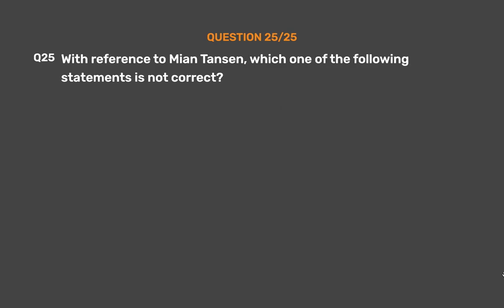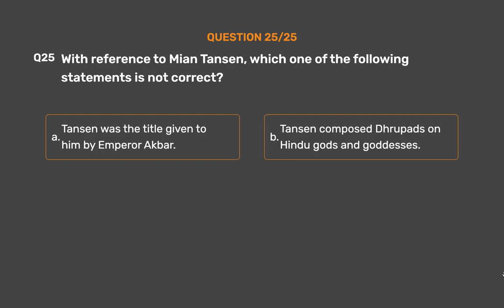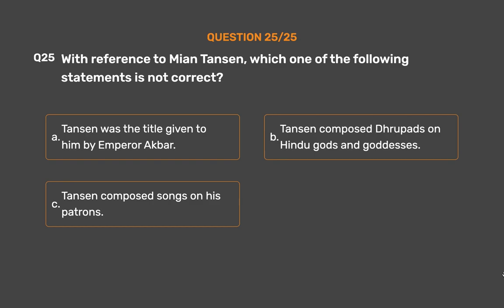Question No. 25: With reference to Mia Tansen, which one of the following statements is not correct? Option A: Tansen was the title given to him by Emperor Akbar. Option B: Tansen composed Dhrupads on Hindu gods and goddesses. Option C: Tansen composed songs on his patrons. Option D: Tansen invented many ragas.